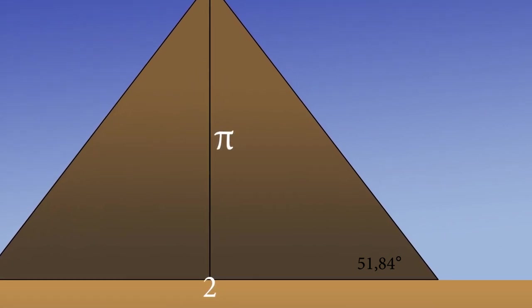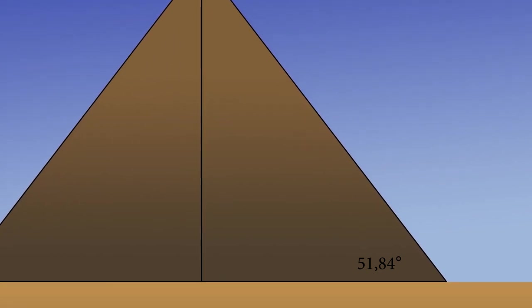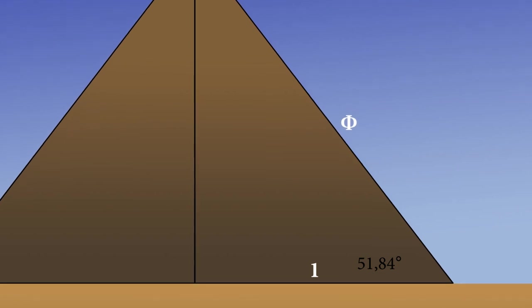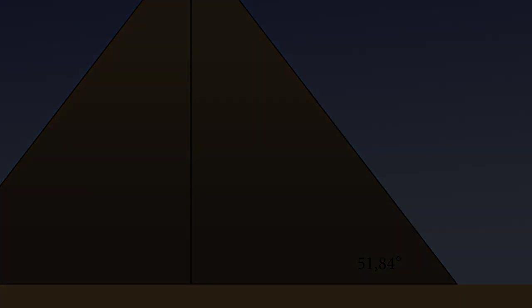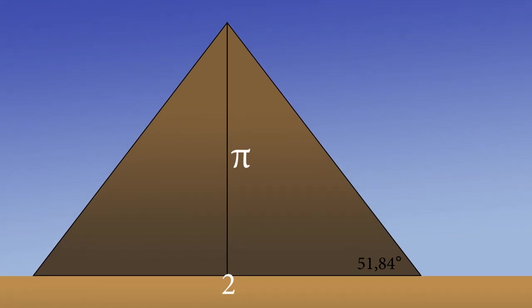Furthermore, the ratio between the slope length and half of the base width is the golden ratio with equal precision. All this seems to indicate that the pyramid designers intentionally wanted to include the values of pi and phi into its geometry.